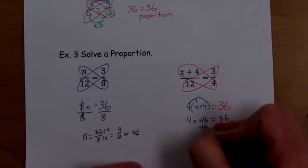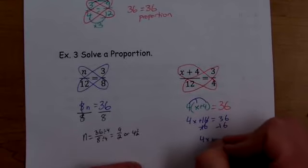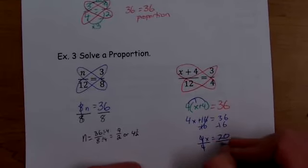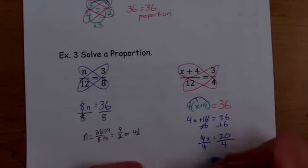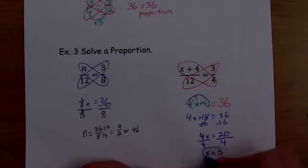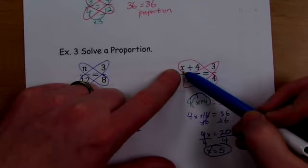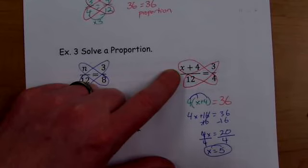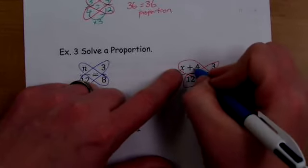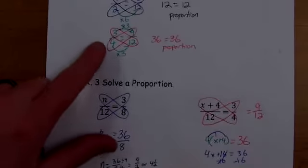4x plus 16 equals 36. Two-step equation. Subtract 16. Subtract 16. 4x equals 20. Divide by four. Divide by four. X equals five. So that doesn't mean five goes in here. What it means is five goes in for x. Five plus four is nine. So that means this is 9/12. So this should be 9/12. Well, 9/12 is proportional to three fourths. We saw that up here.